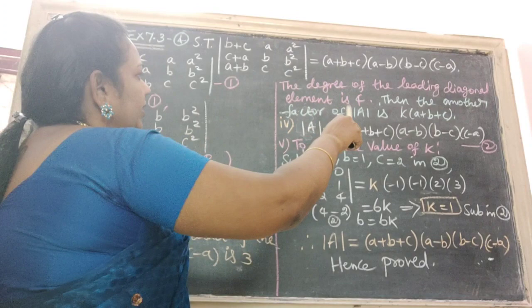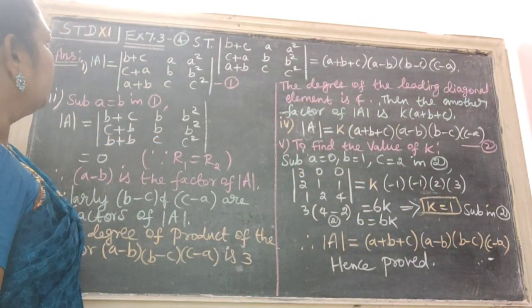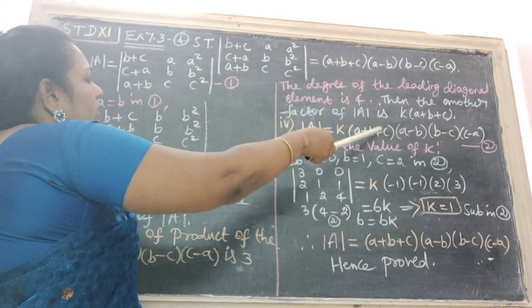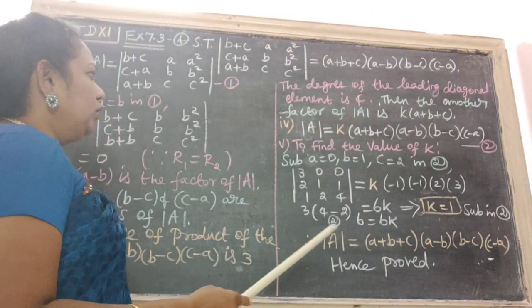Next step, write down the determinant A value which is equal to K into A plus B plus C, A minus B, B minus C, C minus A. This is equation number 2.